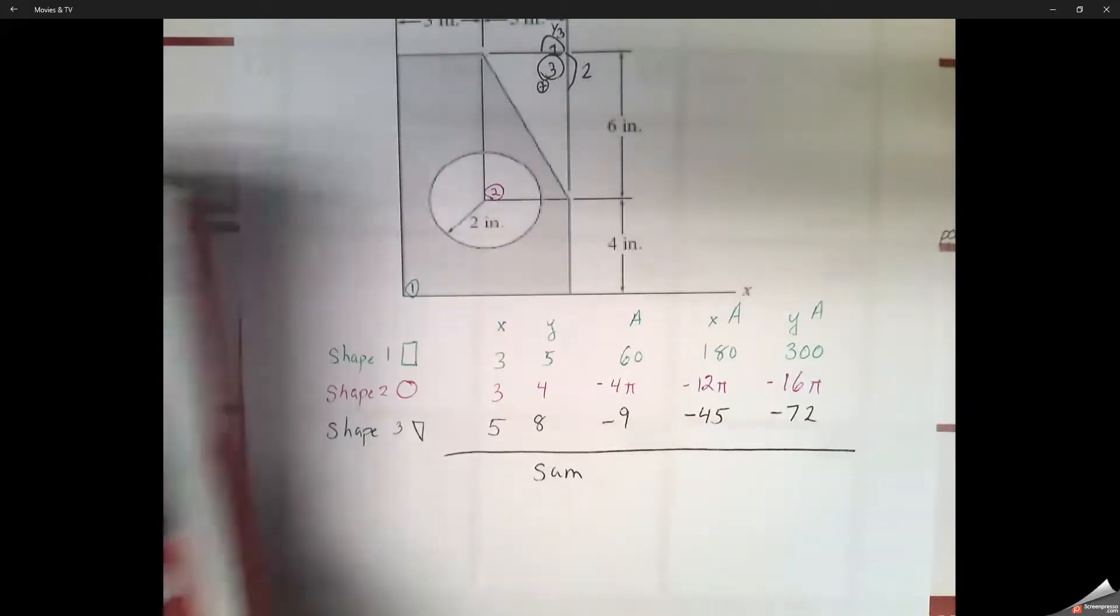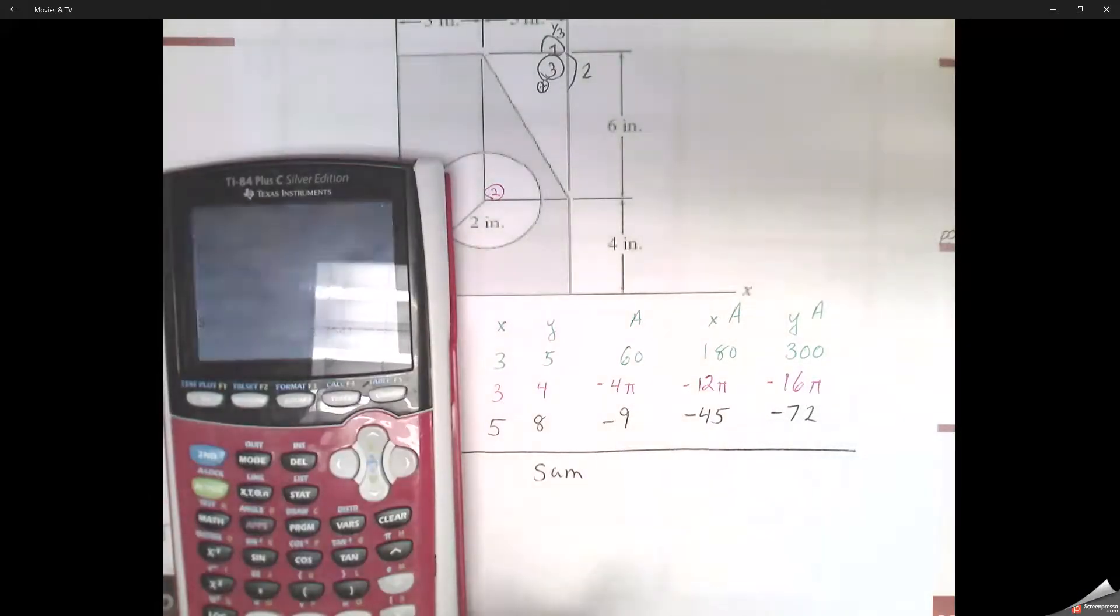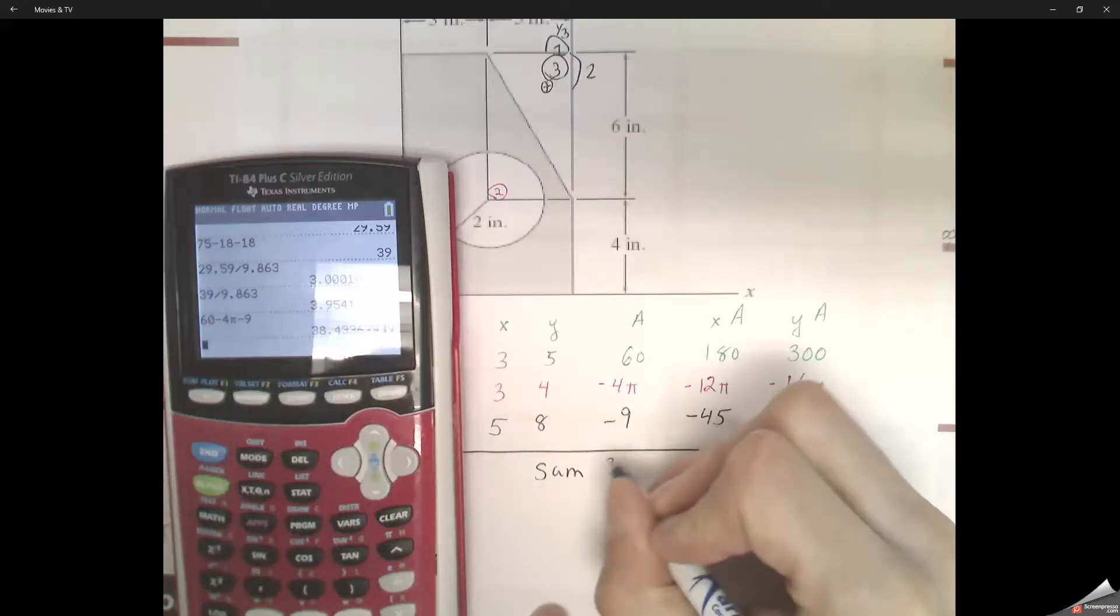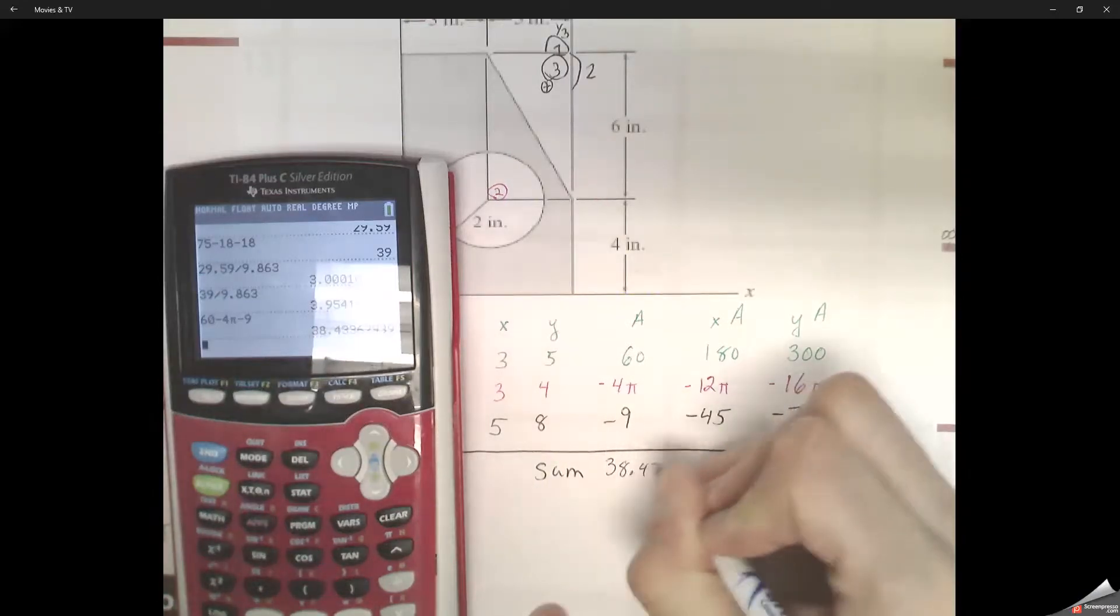So then we look at the sum. We've got 60 minus 4 pi minus 9. So we left 4 pi in the notation previously. Now we're going to go through and actually type it into the calculator for us, and we've got negative 38.43.